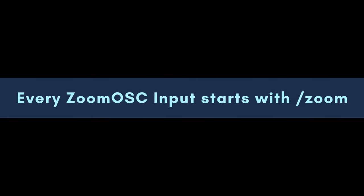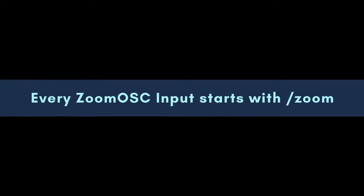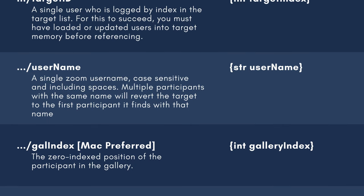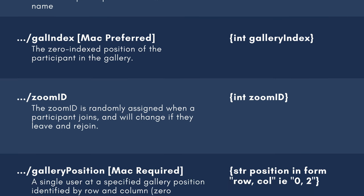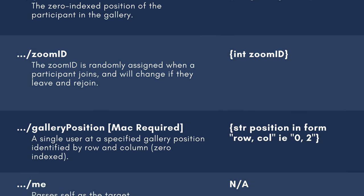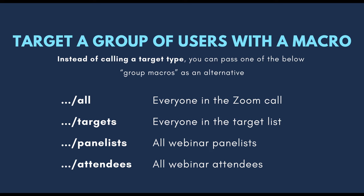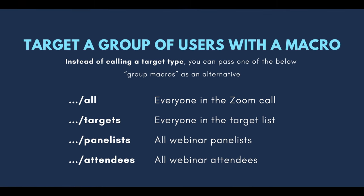Let's now take a look at the OSC structure that Zoom OSC uses. When you download the Zoom OSC application, it also comes with a very nice PDF that outlines all of the commands that you can use. Starting with the overarching OSC structure, any command that we wish to send to Zoom OSC needs to begin with /zoom. To target a user, there are a couple different ways we can do that: we can use the target ID, their username, the user index in gallery view, or their Zoom ID. If you need to send a command to yourself, you can use "me". Additionally, you can target groups of users using all, targets, panelists, and attendees.